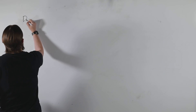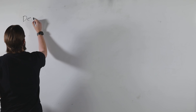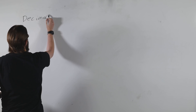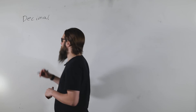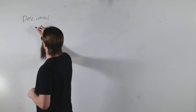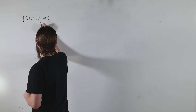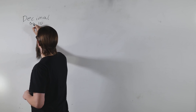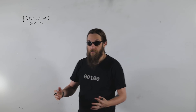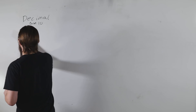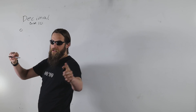Let's start with very basic decimal — everybody should have heard of this. This is what we call a base 10 numbering system, which means that we're using 10 digits. We start with zero — always start with zero.